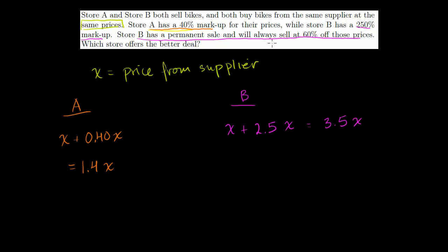But then they sell at a 60% off those prices. So the real selling price is going to be 3.5 times the price from the supplier minus 60% of this price of 3.5x. And we could view this as 1 times 3.5x minus 0.6 times 3.5x. And that's the same thing as 1 minus 0.6 times 3.5x. This is going to be 0.4 times 3.5x. If you're taking 60% off, it's equivalent of selling it at 40% of the ticket price.